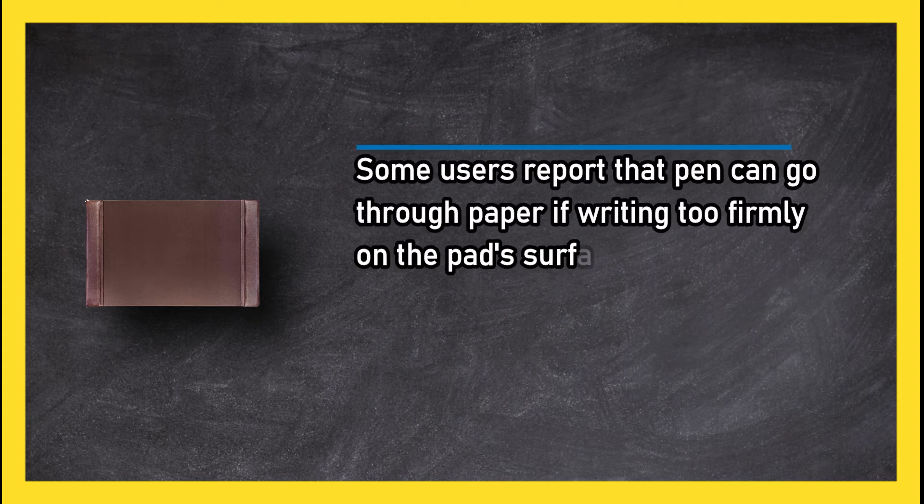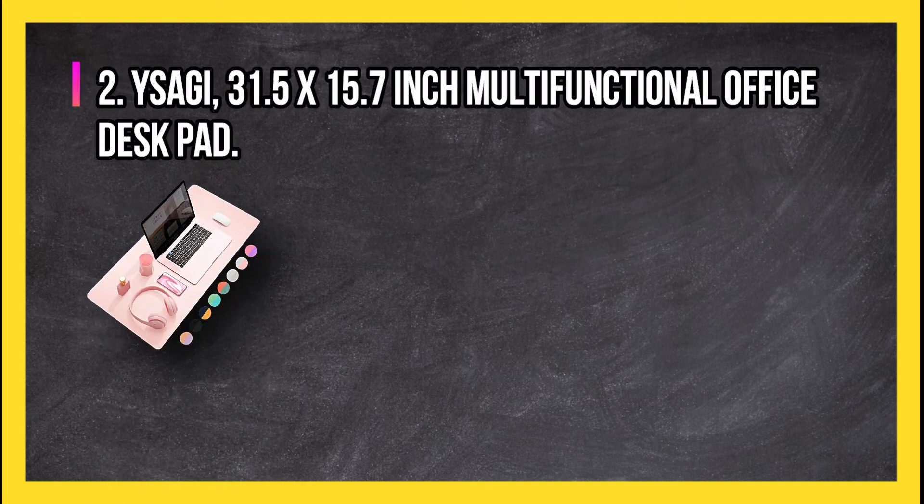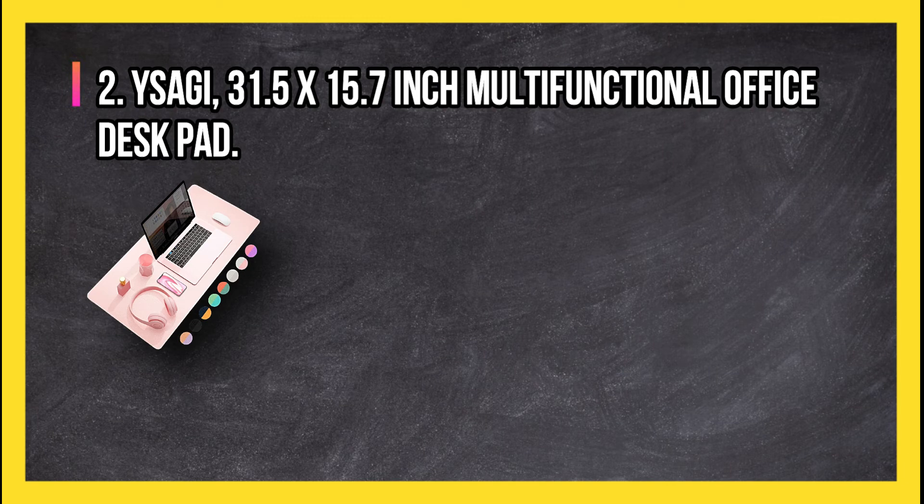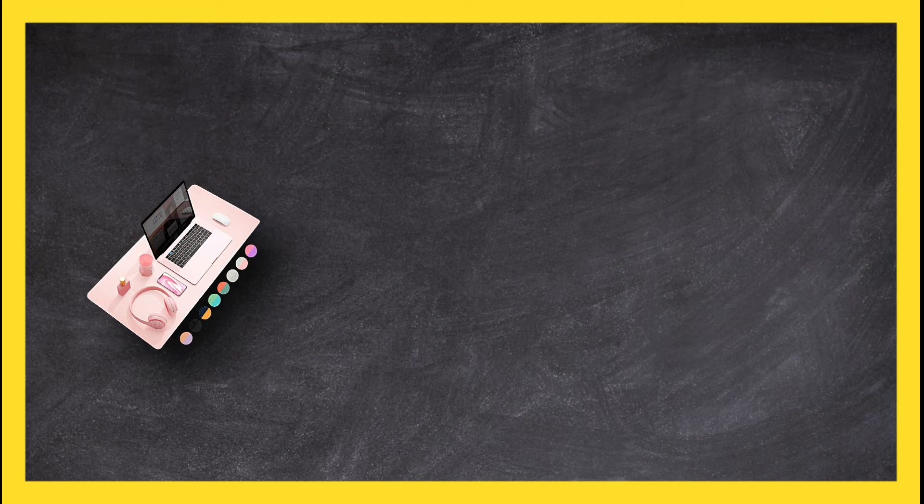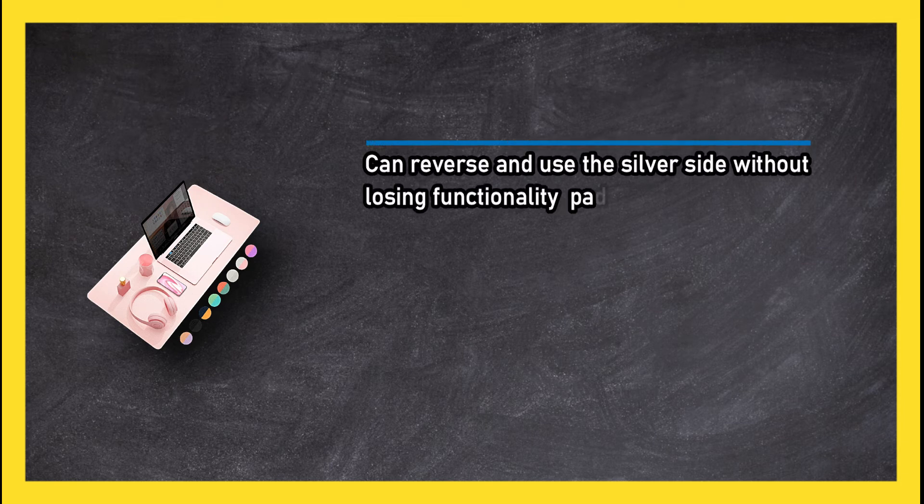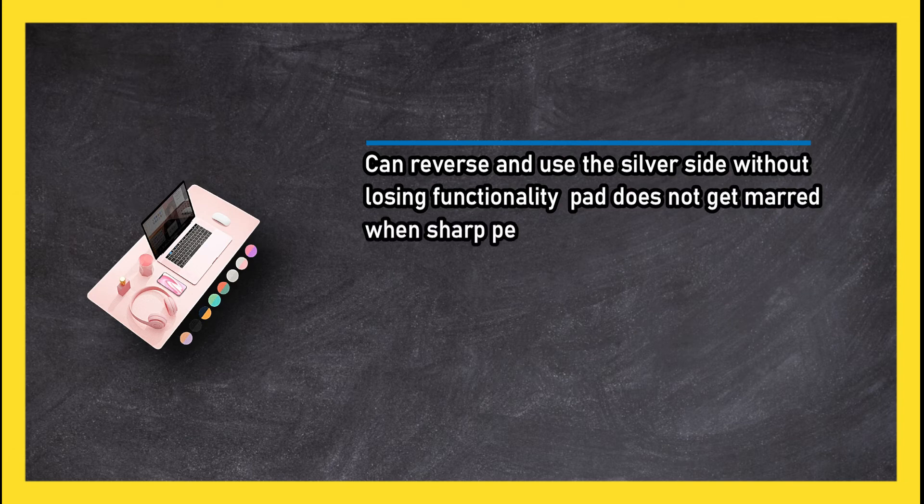At number two, YSAGi 31.5 by 15.7 inch multifunctional office desk pad. Can reverse and use the silver side without losing functionality. Pad does not get marred when sharp pens or pencils are used. Included strap holds it in a tubular shape if transporting from place to place.